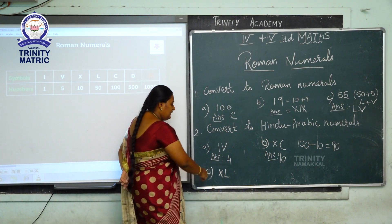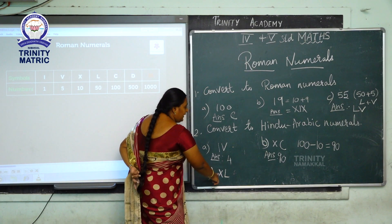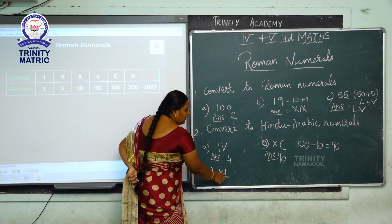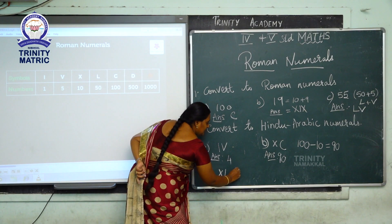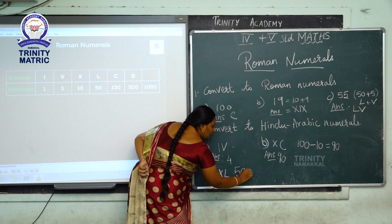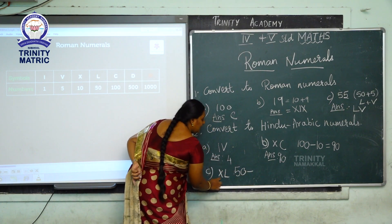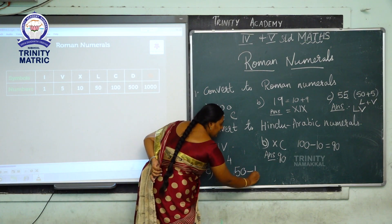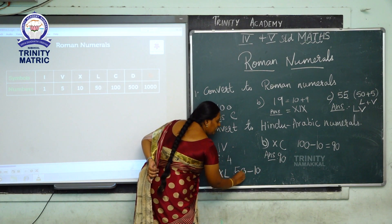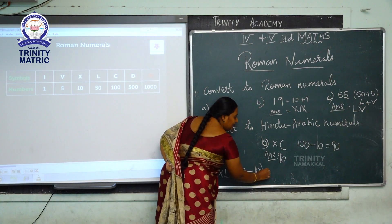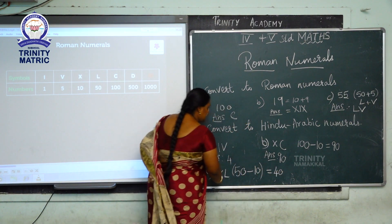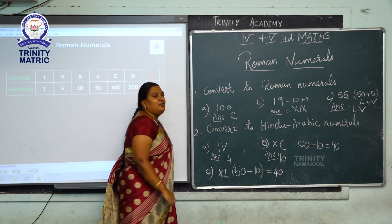Next, C sum: what is the Hindu-Arabic numeral for XL? What is the number for L? That is 50. What is the number for X? That is 10. So 50 minus 10 equals 40. XL equals 40.